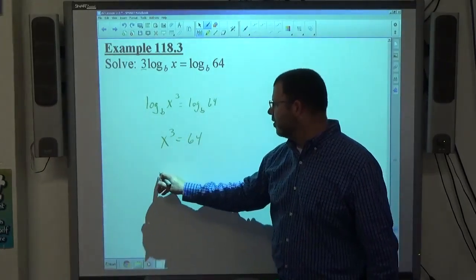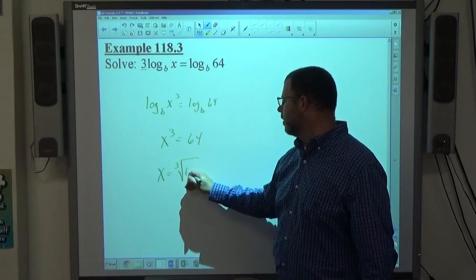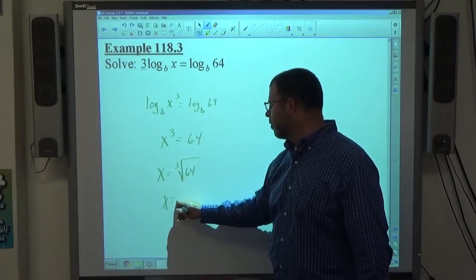If x cubed equals 64, that means x is going to equal the cube root of 64. And hopefully we all know the cube root of 64 is equal to 4.